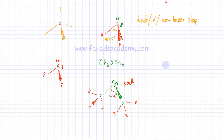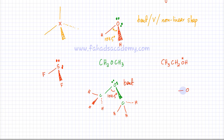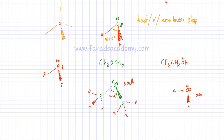Another example is ethanol, CH₃CH₂OH. Focusing on the oxygen atom, it is bonded to a carbon atom and a hydrogen atom. Because this oxygen has two lone pairs, the arrangement around it is bent and V-shaped. The bond angle around the oxygen atom is 104.5 degrees.